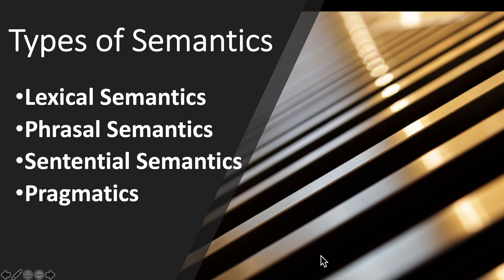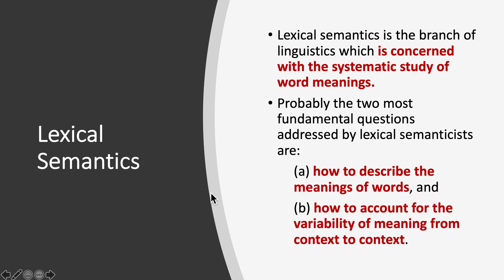Hello and welcome to the topic of types of semantics. We have four types of semantics: number one, lexical semantics; two, phrasal semantics; three, sentential semantics; four, pragmatics. Let's talk about each one of them in detail, one by one.